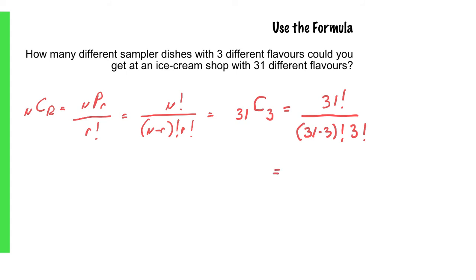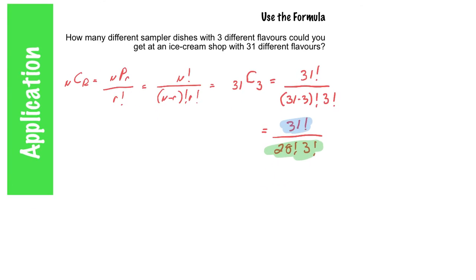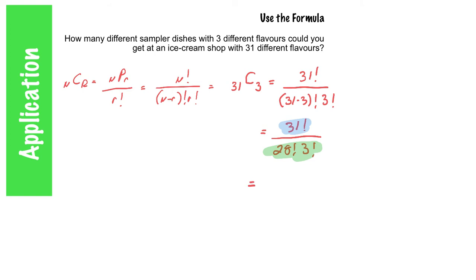And that will turn into 31 factorial over 31 minus 3 factorial 3 factorial. And when you simplify that, it becomes 28 factorial 3 factorial. Notice that 28 plus 3 adds up to 31. And when all is said and done, that magical number is 4495.